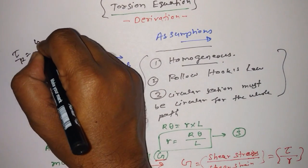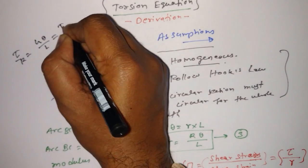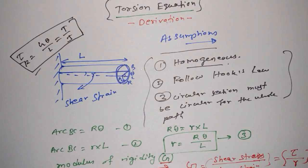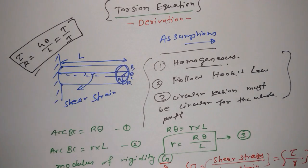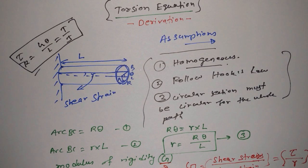Our main goal is to get the full torsion equation: tau/R = G·theta/L = T/J. What we have derived till now is tau/R equal to G·theta/L, which means half of the equation is done. For deriving the remaining part, we have to consider a circular cross-section, which I'm going to share with you in the next phase.